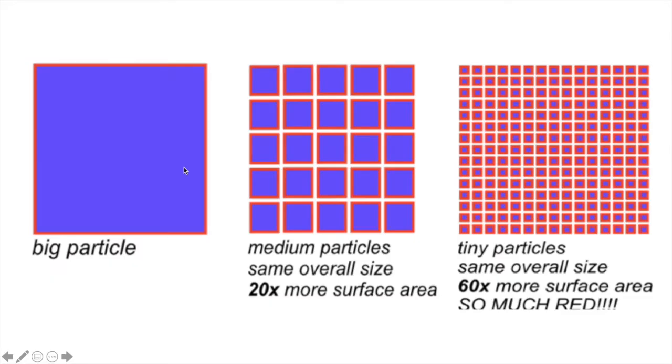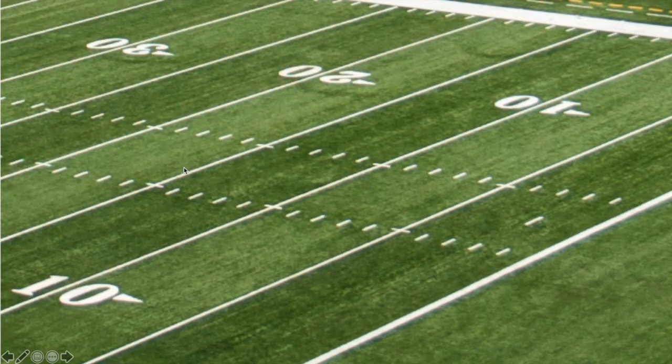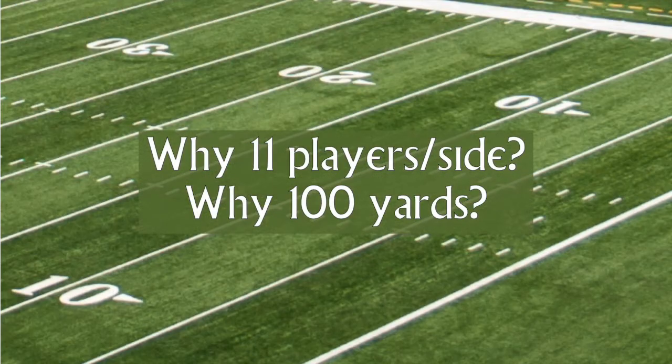This image shows basically the same thing, only using the red color to show how tiny particles can cover an area, but have much more surface area to maintain it. One more example, which I hope will bring the point home. Have you ever wondered, why does football happen with 11 players to a side on a 100-yard field? What if each side only had five players, like basketball? Or what if the field were 100 miles long with those same 11 players? Something to think about, and how it relates to the previous topic.